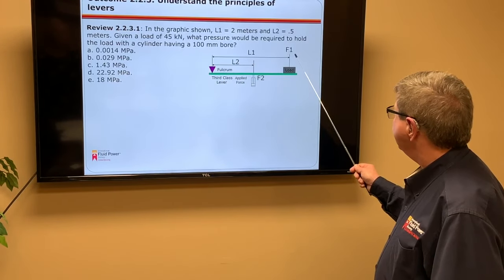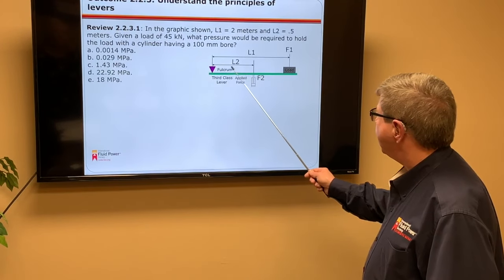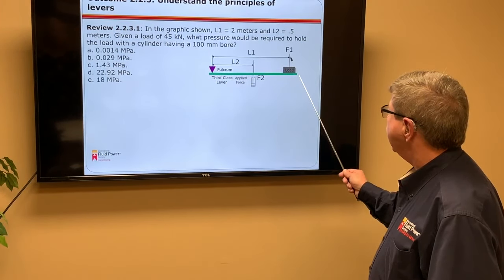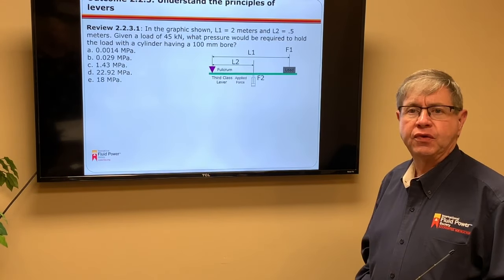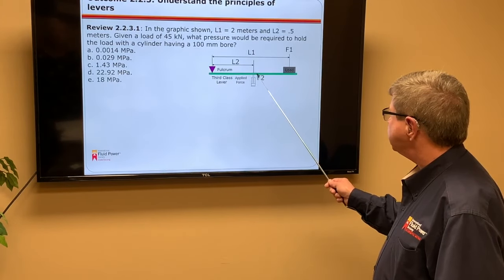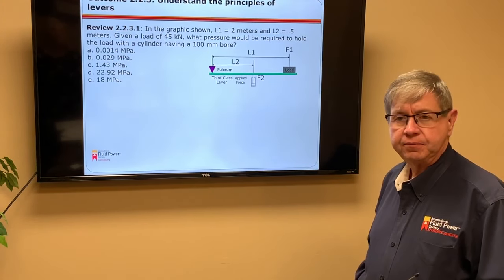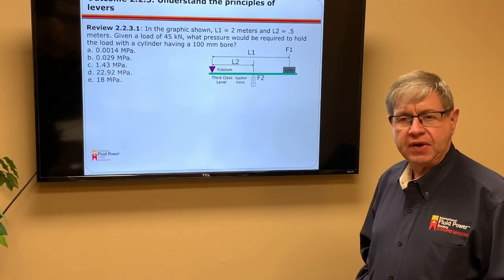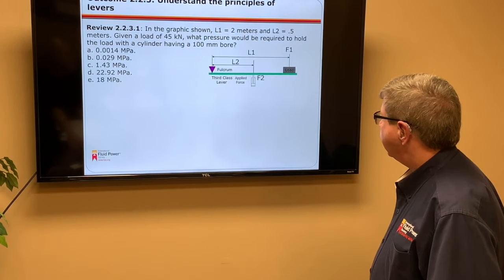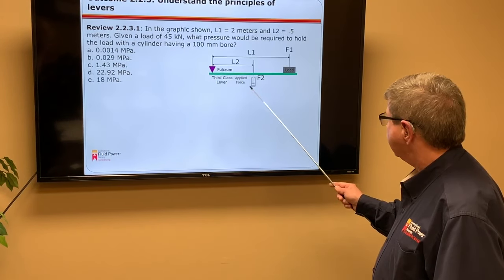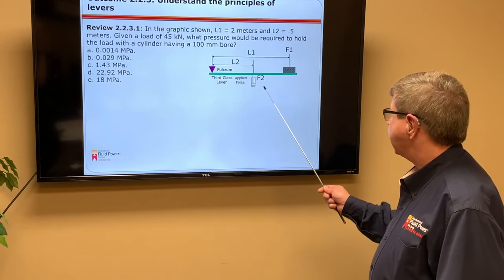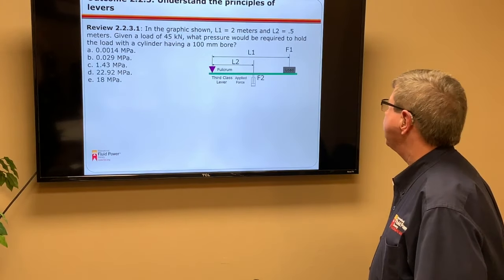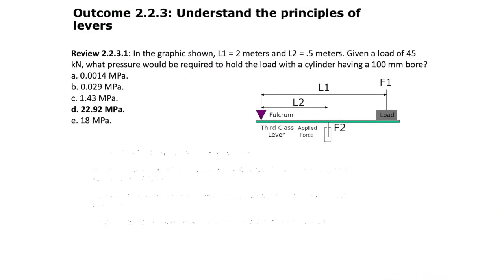But my load here is 45 kilonewtons. My distance is 2 meters. This distance is 0.5 meters, so F1 times L1 must equal L2 times F2. And if I do the math, then I will see that F sub 2 is a factor of 4. So it takes 4 times the force at this point compared to the load value. So at that point, now I can calculate what my total force is for F sub 2, which is 4 times 45 kilonewtons. That then times, looking at the area of the 100 millimeter bore, calculating that area, and dividing that into that force component we just calculated will give me the pressure that is required: 22.92 megapascals.